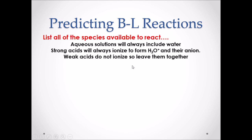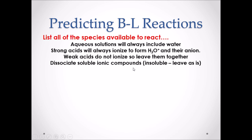Weak acids do not ionize, so when we list weak acids, we list them as they appear. We will dissociate any soluble ionic compounds and list their ions. If we have an insoluble ionic compound, we will leave the compound as it appears. Finally, metal ions do nothing and they are just spectators in Bronsted-Lowry reactions.